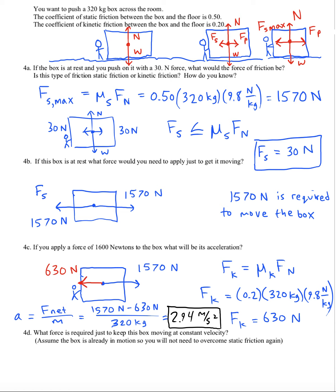But now let's say you want to ease off of your push. You want to just allow your box to travel with constant velocity. Then you don't have to push with 1570 newtons anymore. How hard do you have to push in order to keep it moving?